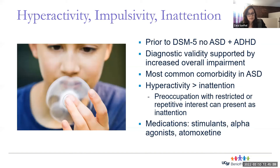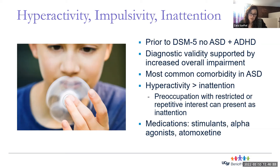Prior to DSM-5, ADHD could not be diagnosed as a comorbid condition with autism. Now it's estimated that 40 to 70% of children with ASD have ADHD. Hyperactivity, impulsivity, and distractibility add to the overall impairment in kids with autism. Children with autism appear to have more prominent hyperactivity relative to inattention — and notably, a preoccupation with a restricted interest can appear like inattention. Recommended medications for ADHD in autism are the same as in the general child population: stimulant medications and non-stimulant medications like the alpha agonists.